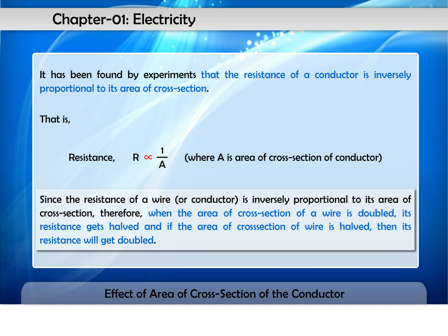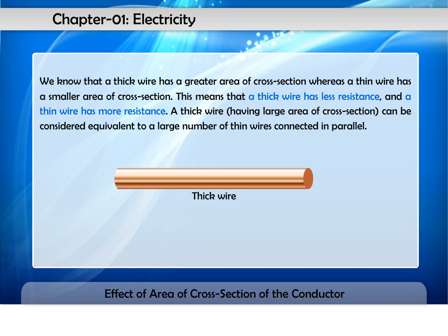When the area of cross-section of a wire is doubled, its resistance gets halved, and if the area of cross-section of wire is halved, then its resistance will get doubled.